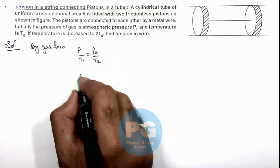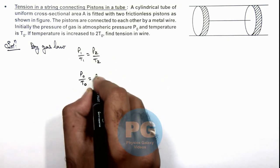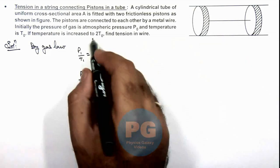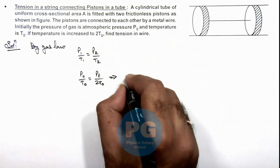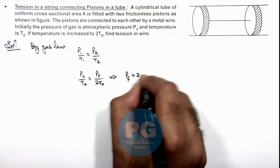P_final by 2T₀, as final temperature is increased to 2T₀, which results in the final pressure of gas being equal to 2P₀.